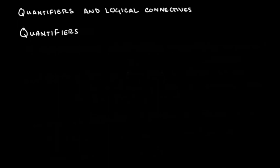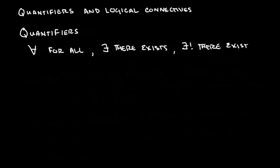So let's start with quantifiers. The symbols for quantifiers include the upside down A, which we use to denote 'for all'. We have the reflected E, which means 'there exists'. And we have 'there exists a unique' by using the reflected E with an exclamation point, so there exists a unique number which satisfies a certain property.